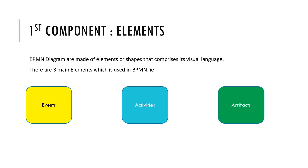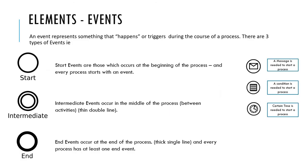The first type of element is called event. An event represents something that happens or triggers during the course of a process. There are three types of events: start events, which occur at the beginning of the process; intermediate events, which occur in the middle of the process between activities; and end events, which occur at the end of the process. We can also use icons inside these events for more clarity, such as a message icon, condition icon, or clock icon.